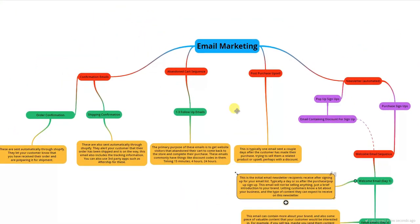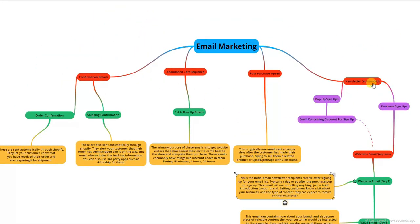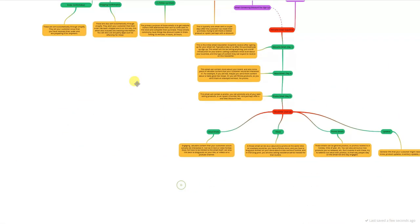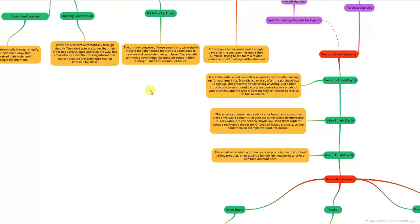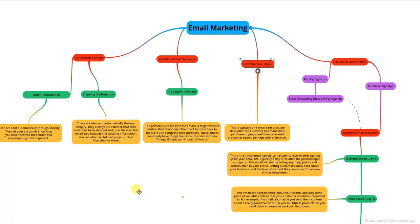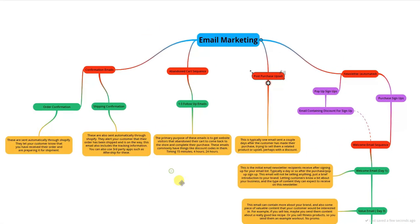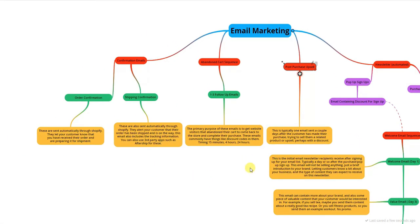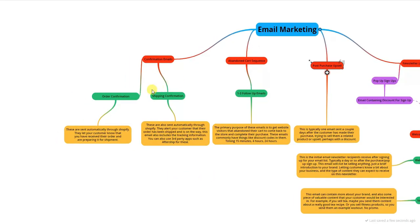I've broken this into four primary categories of emails: confirmation emails, abandoned cart sequences, post-purchase upsells, and then the newsletter, which is pretty big. We're going to be covering this from left to right, saving the biggest for last, as that's going to be the most important one.